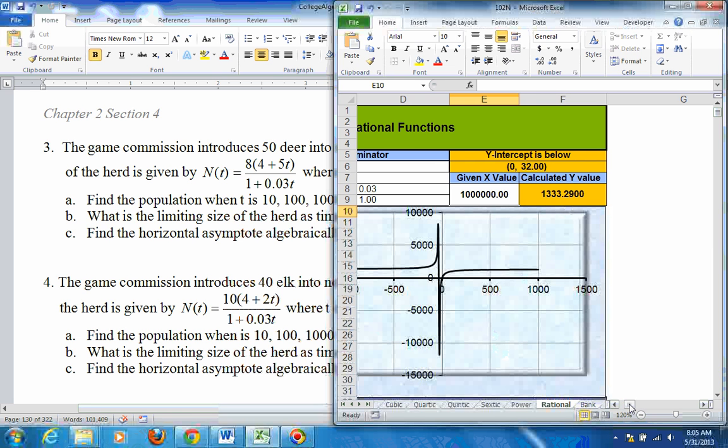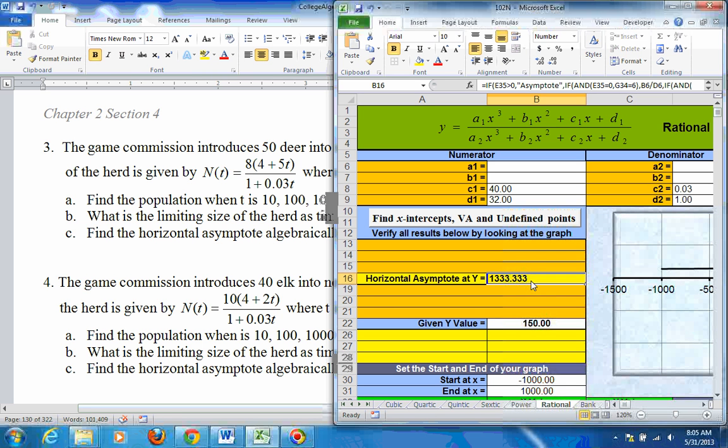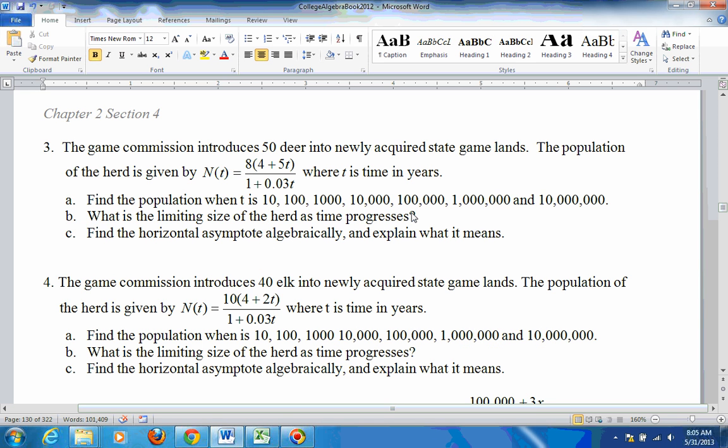And, in fact, that's what the horizontal asymptote is here, 1,333.3333. So that's the horizontal asymptote. That's the limiting size of the herd, too. So what's the limiting size of the herd? It levels off to 1,333. Find the horizontal asymptote algebraically. Well, that's where you look at your leading coefficients. When you take this 8 through, the leading coefficient up here is 40. The leading coefficient down here is 0.03. And if you take 40 divided by 0.03, you get 1333. Now, you only do that division if the powers are the same. The power on the top is the first power. The power on the bottom is the first power. And when the powers are the same, you just divide your leading coefficients. So that's 40 divided by 0.03, or 1,333.